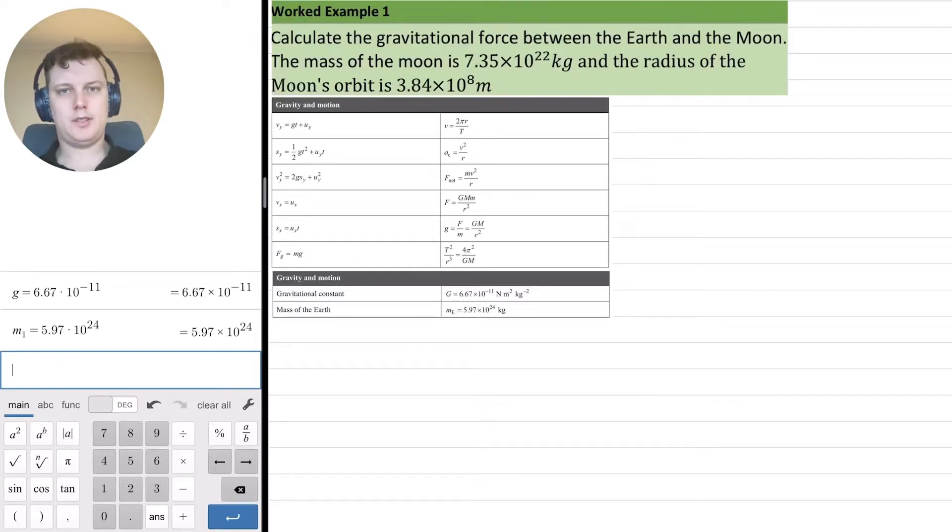In this video I'm going to go through a very simple example of using Newton's law of universal gravitation. I've already stored our two constants, the gravitational constant and the mass of the earth in my calculator. So I can get rid of that part of the formula book.